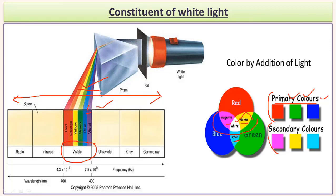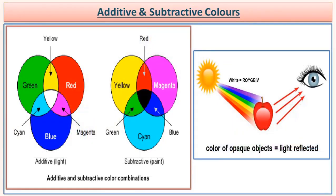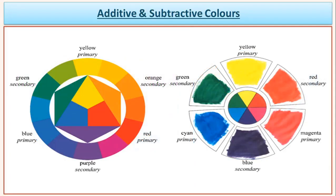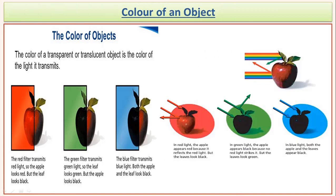Now let's look at the additive and subtractive property of colors. It is actually the combination of different colors. When we combine primary or secondary colors with each other, we can get different shades of color. This principle is used by painters or artists to create different shades and patterns by mixing primary or secondary colors with each other.